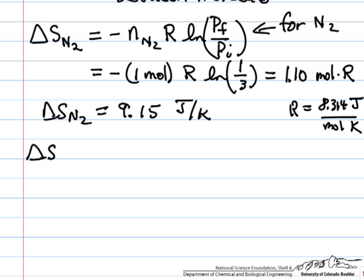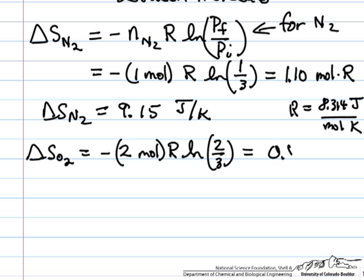Well the same calculation for the entropy change for oxygen, so 2 moles times R, log of the final pressure two thirds, the initial pressure is one, so log of two thirds. And this equals 0.81 moles times R.